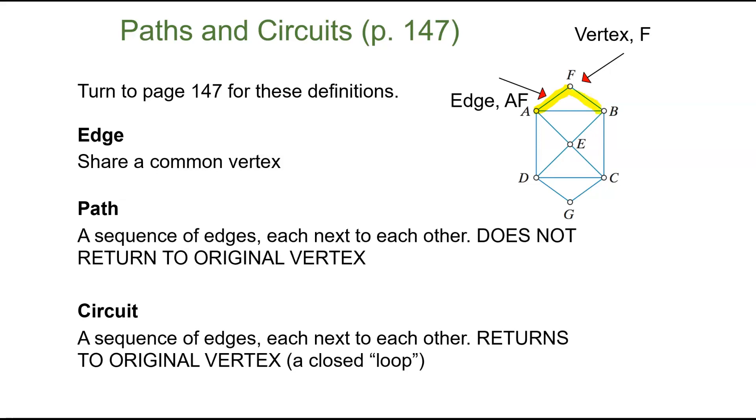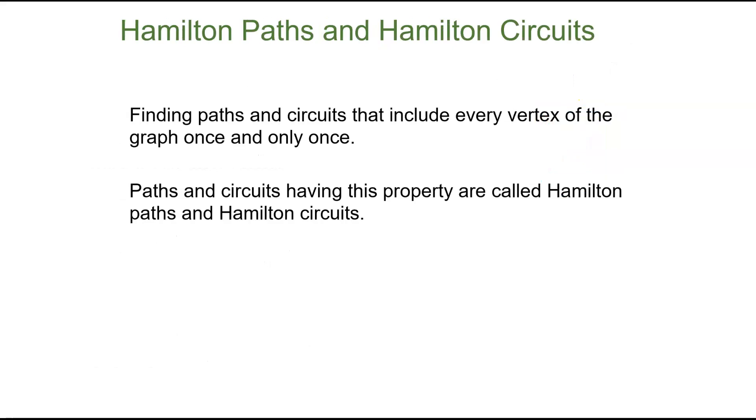And a path is a sequence of edges, each next to each other, and does not return to the original vertex. So a path is just a sequence of edges next to each other. But a circuit returns back to the original vertex. So you could think of a circuit as a loop. So a path doesn't have to go back, but a circuit does.